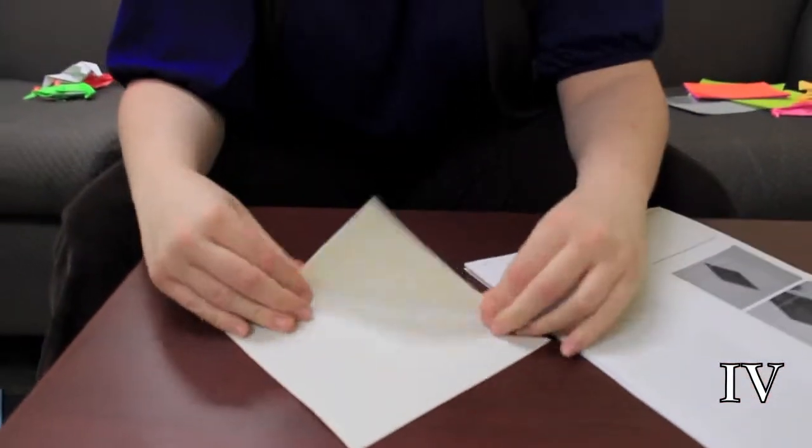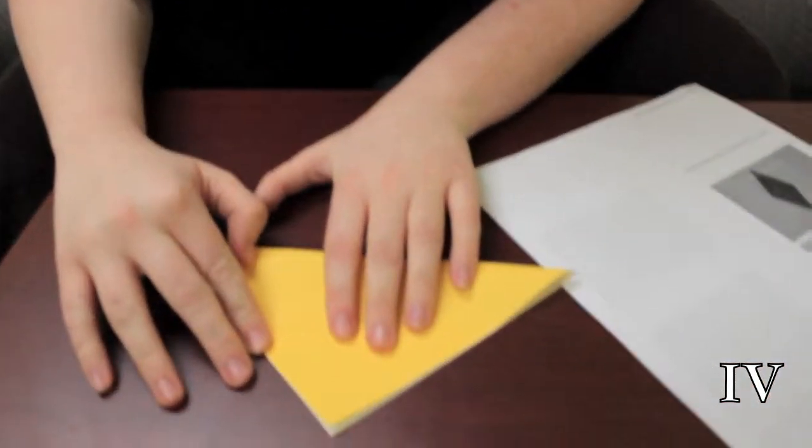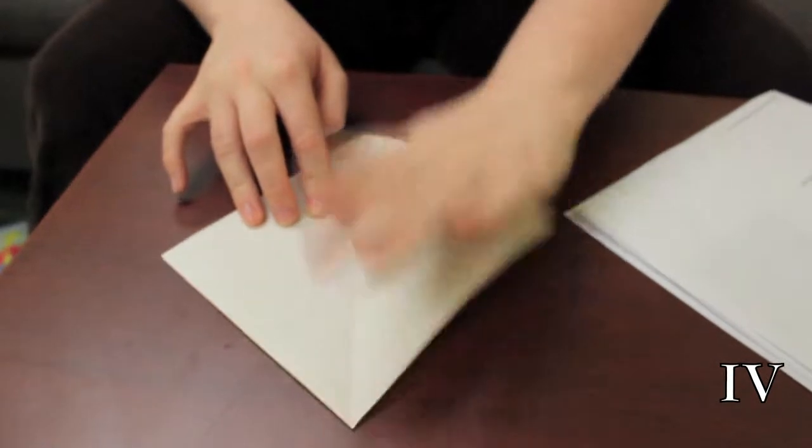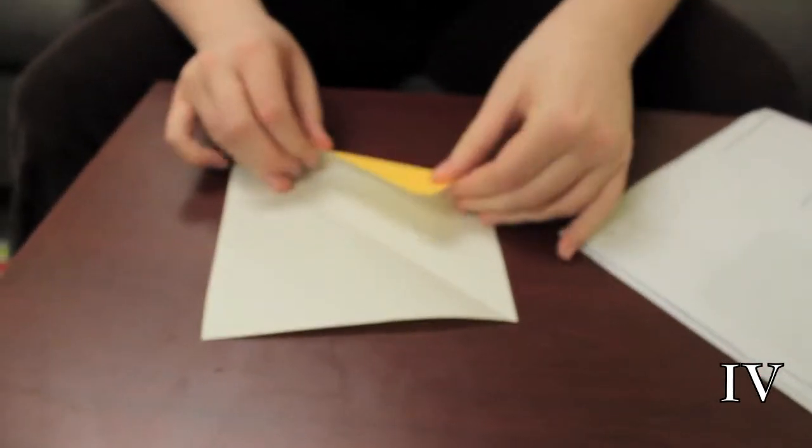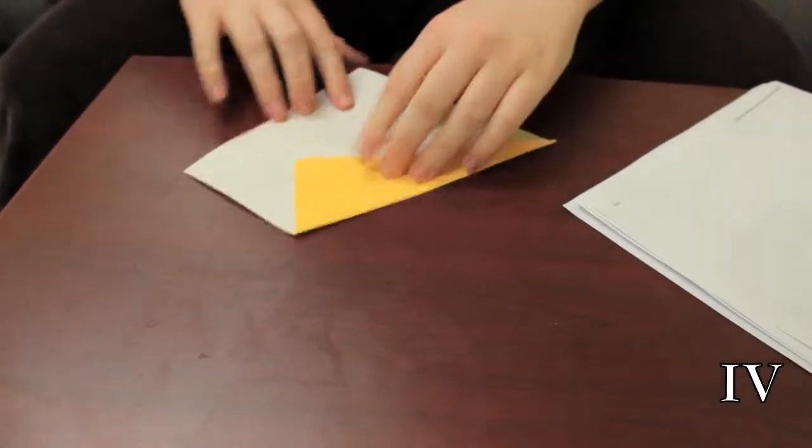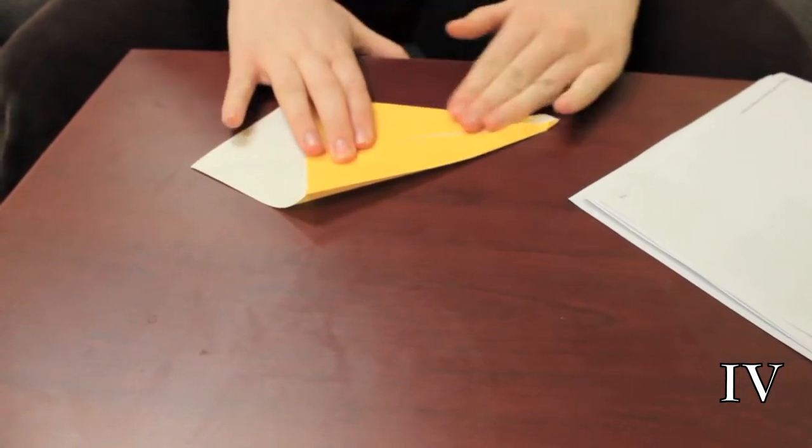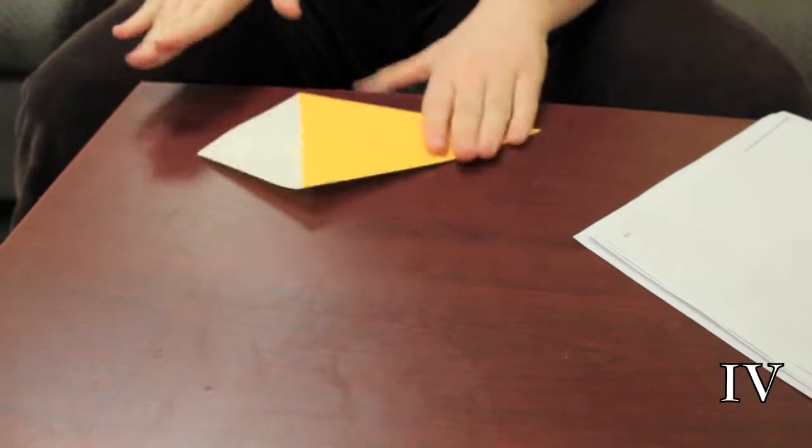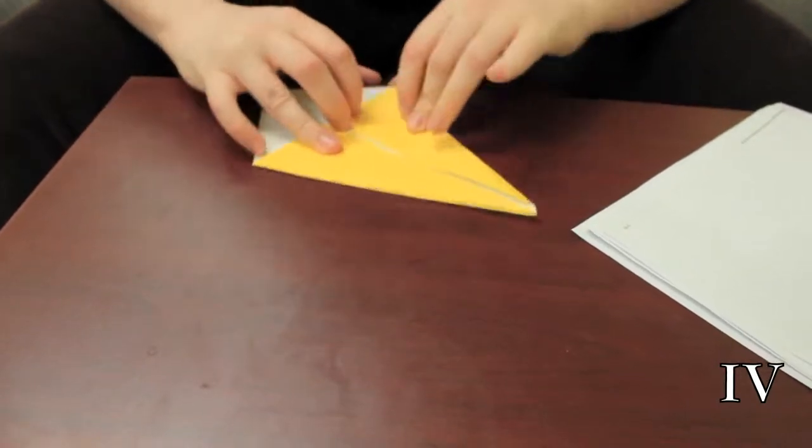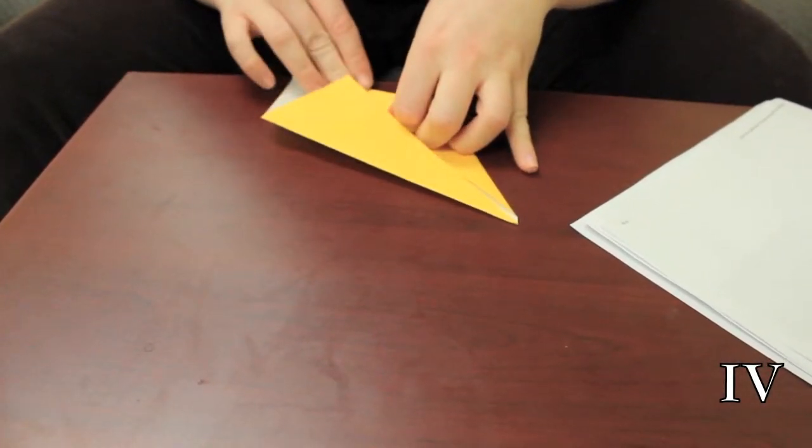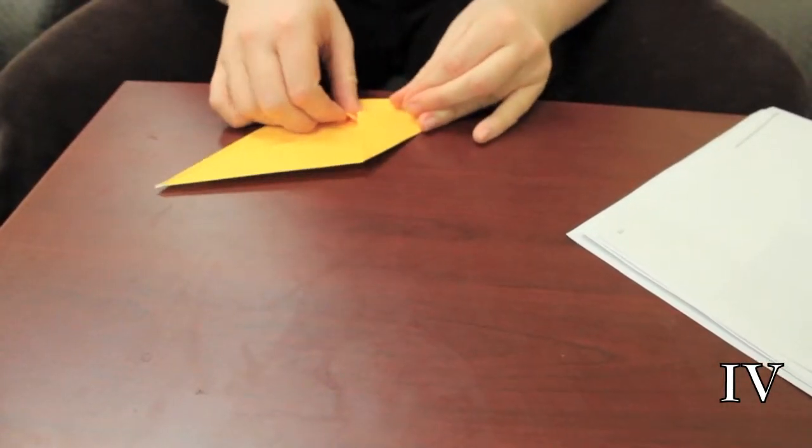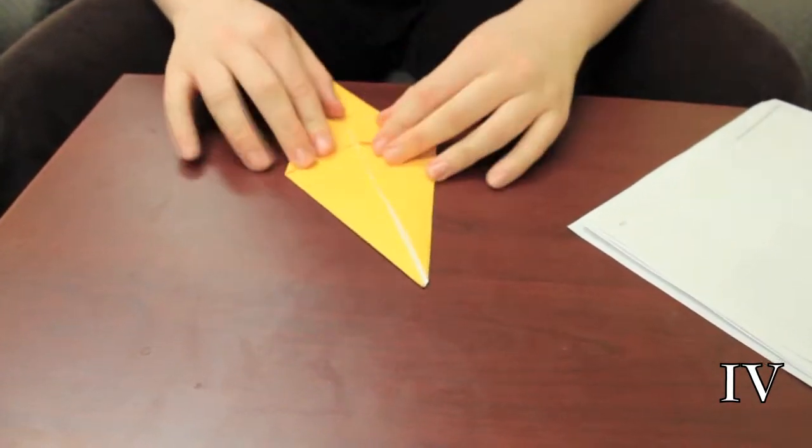So the first thing that we're going to do is we're going to fold a diagonal into the paper. Once that is folded we unfold it and then we're going to fold it in again. But this time we're going to fold it towards the crease so that this looks like a kite. From there you take these corners and you fold them in so that it looks like that.